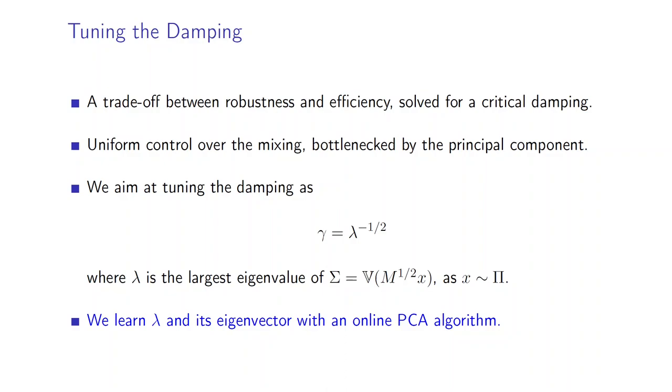When it comes down to tuning damping, we have to solve a trade-off between robustness and efficiency, which can be solved with the critical value of damping in the Gaussian case. We build upon these Gaussian heuristics and we aim at tuning this damping as the inverse square root of λ, where λ is the largest eigenvalue of the covariance matrix of x in the preconditioned space. We will learn λ and its eigenvector with an online PCA algorithm.